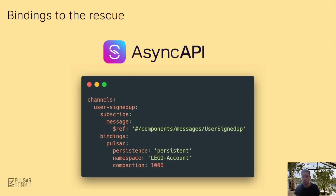Where we before had x-something for each thing we wanted to describe, we now have a standardized way of describing Pulsar-specific configuration. In AsyncAPI, you can have multiple bindings per channel, which means that you could have a topic that exists both in Pulsar and SNS and still denote these technology differences.